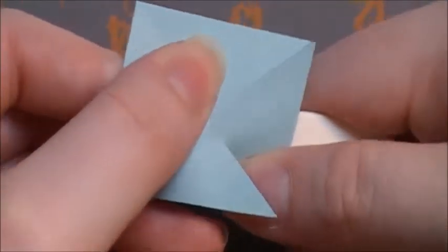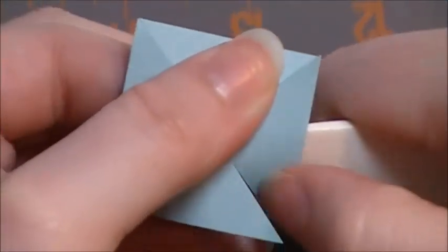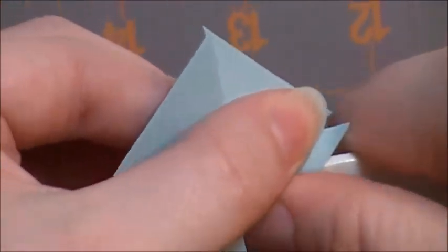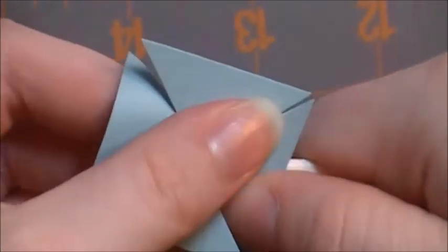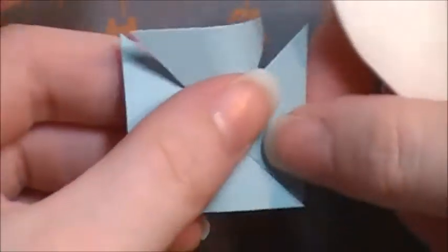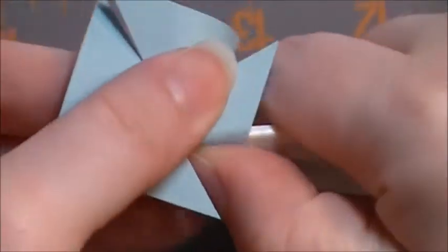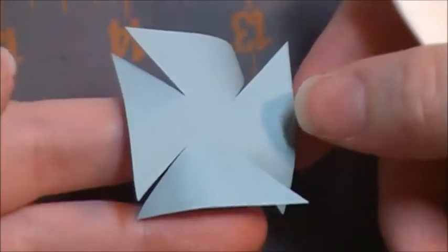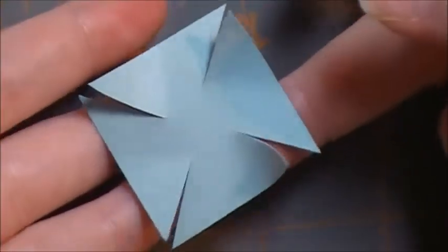Then we're going to turn it and we're going to do it to this one. You're just going to do it a few times so that it breaks the fiber so that it'll bend very easy for you. Do it again and to the last one. So then you end up with a piece that looks like that. Here's the reverse side.